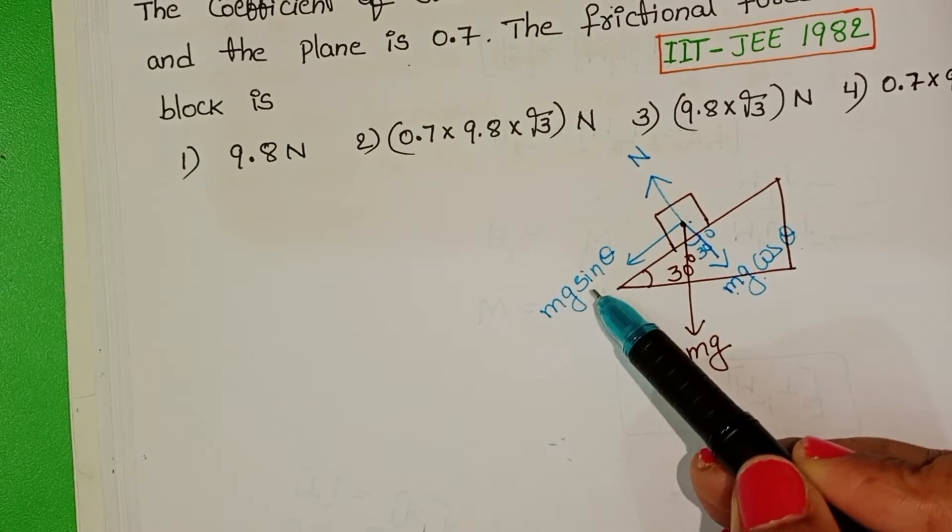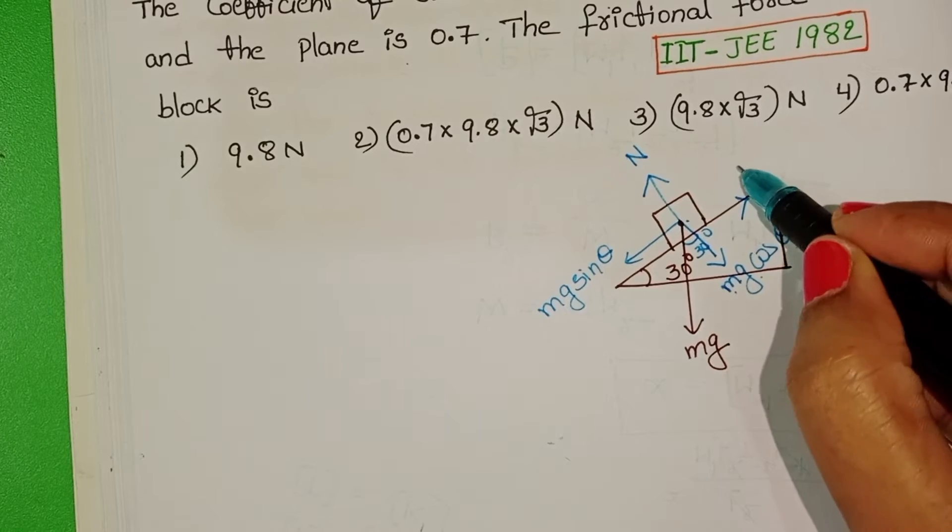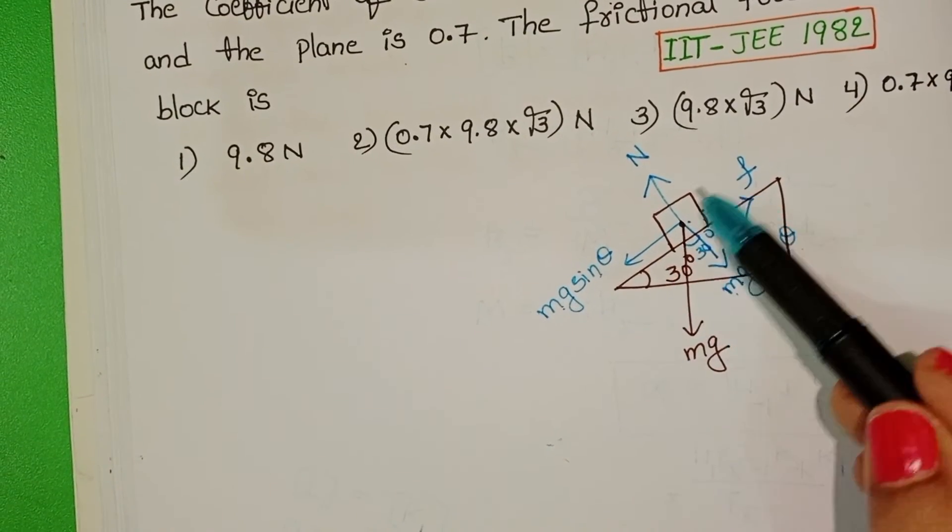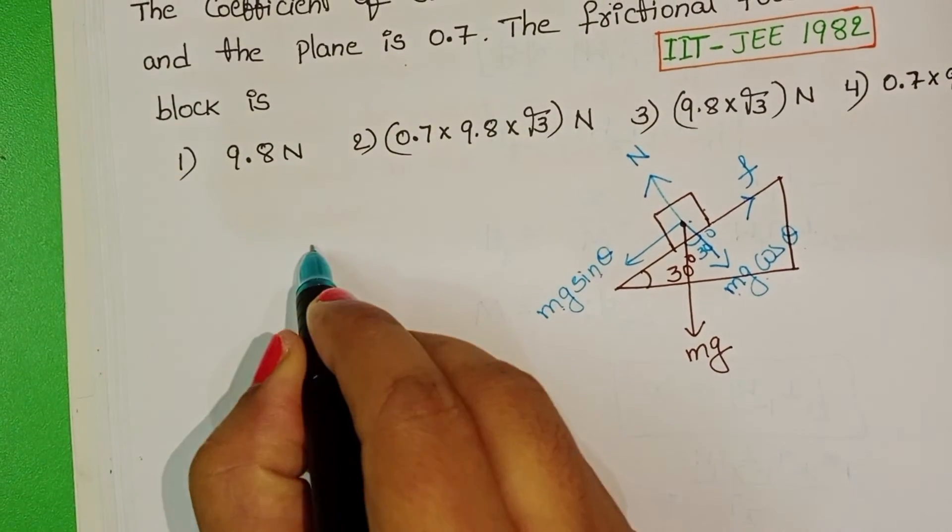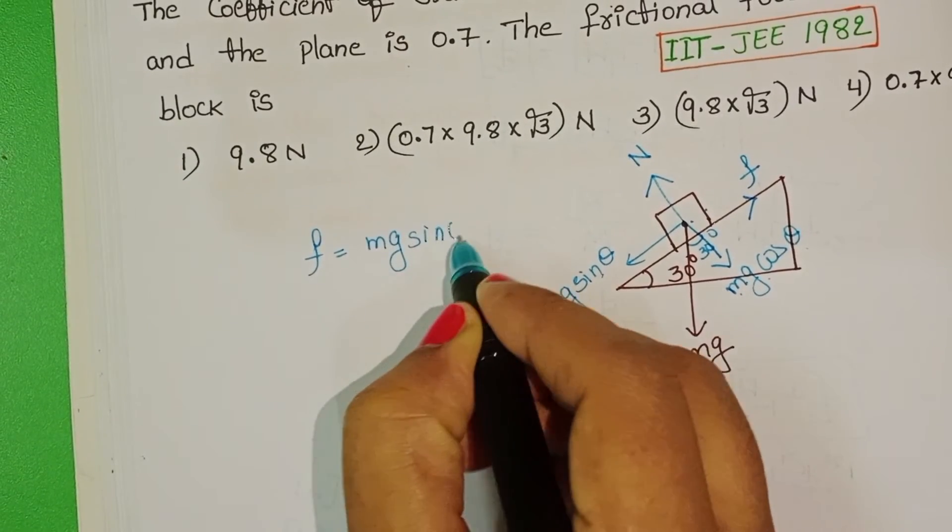Here, mg sin theta is acting in downward direction. So frictional force is acting in upward direction. Block at rest position. That means, frictional force equals mg sin theta only.